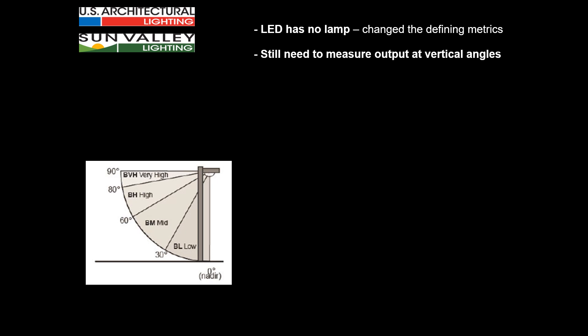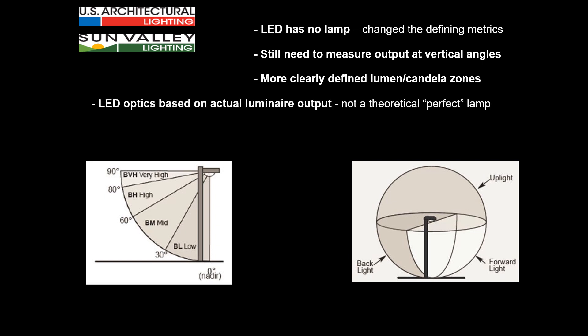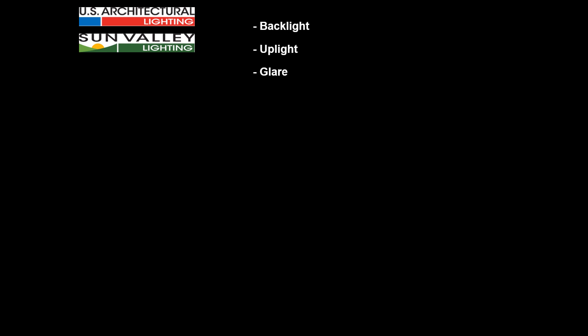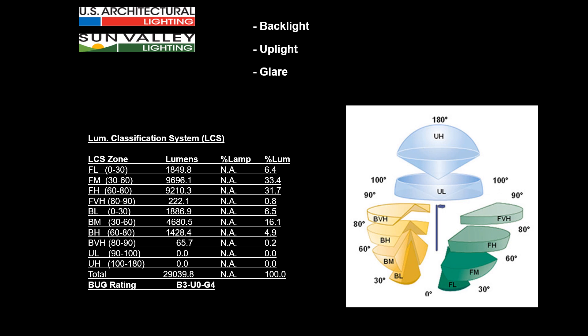What was done was to divide the zone of illumination coming from any luminaire into three areas: the forward light in a downward direction, the backward light in a downward direction, and the total amount of uplight. LED optics are based on the total actual luminaire output, not a theoretical perfect lamp. To give a rating to this, a backlight, uplight, and glare (BUG) measurement was created. It looks at the spherical output and assigns forward, backward, and upward light, breaking those down into various zones that are then analyzed. Certain metrics are applied to allow a certain amount of light in each zone in order to achieve what's called a BUG rating.